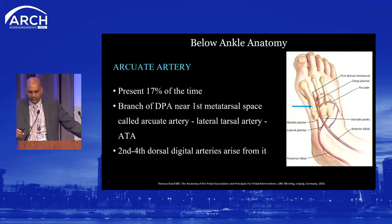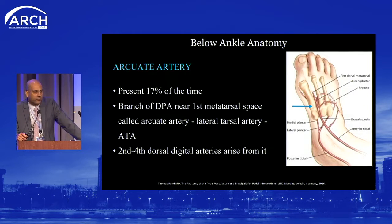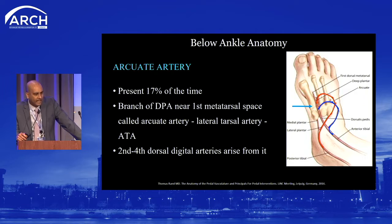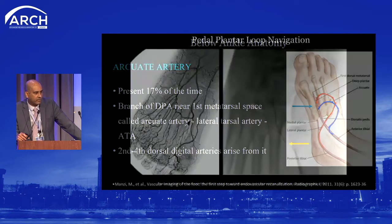Finally, there's the anastomotic loop formed by the arcuate artery, which is a branch of the dorsalis pedis artery at the first metatarsal space. The arcuate artery anastomoses with the lateral tarsal artery and then back to the anterior tibial. It represents a more proximal communication compared to the pedal plantar loop, which arises more distally. When present — which is rare — it gives good supply to the dorsal digital arteries.